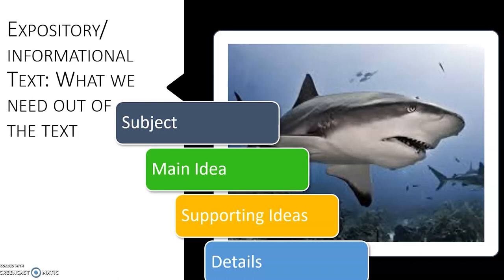There are a couple of things. We have our subject — that is what tells us what we're talking about, the big idea. Next, we have our main idea. That is the subject combined with what the passage is saying about the subject, which will give us our main idea. Then of course we have our supporting ideas and the details that go along with them.